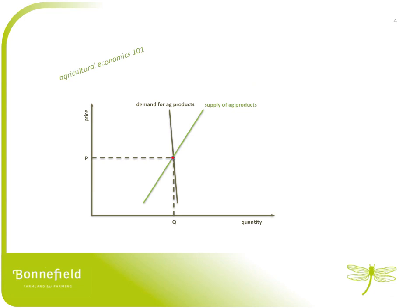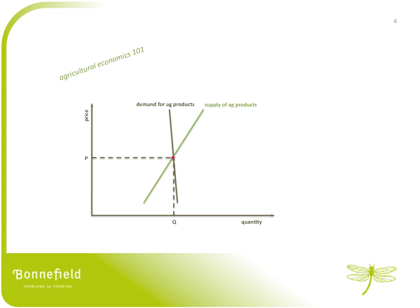So let's return to our supply and demand curves for a moment and see what impact some of these trends are having on agricultural prices around the world. Well, the first significant impact is that growing populations, rising incomes in the developing world, and increasing meat consumption are actually shifting the demand curve to the right. But you can see, because of the inelastic nature of the supply of agricultural products, as the demand curve shifts to the right, prices tend to increase much more dramatically than the output of agricultural goods do.